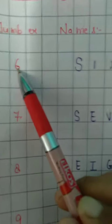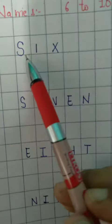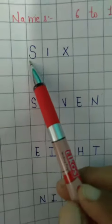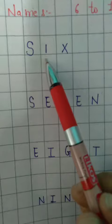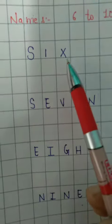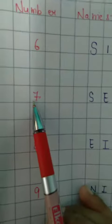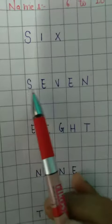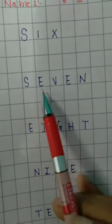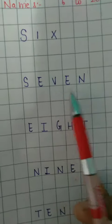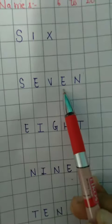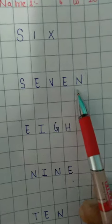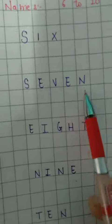Here is written the number 6, and the spelling of this is S-I-X. Next is 7: S-E-V-E-N.